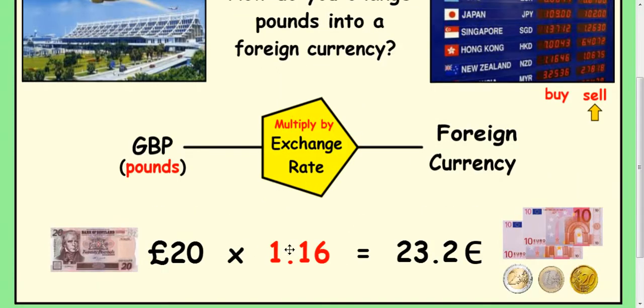At the time this was made, the exchange rate for the Euro was 1.16. It's probably different now, but if you multiply 20 pounds by 1.16, you would get 23 Euros and 20 cents.